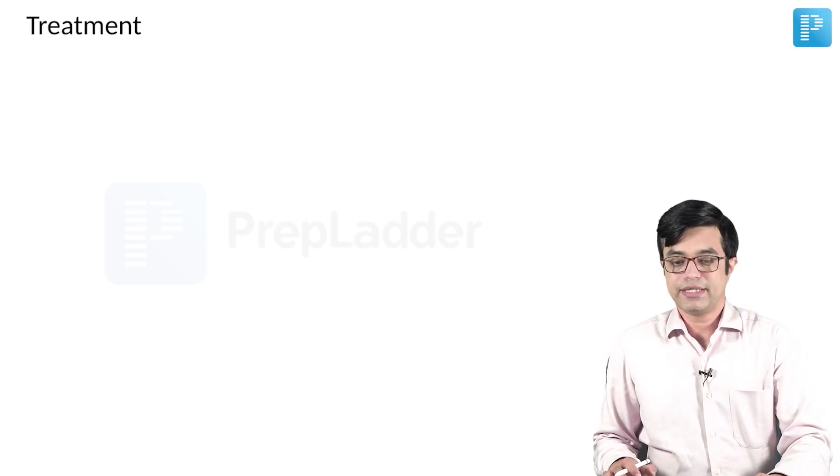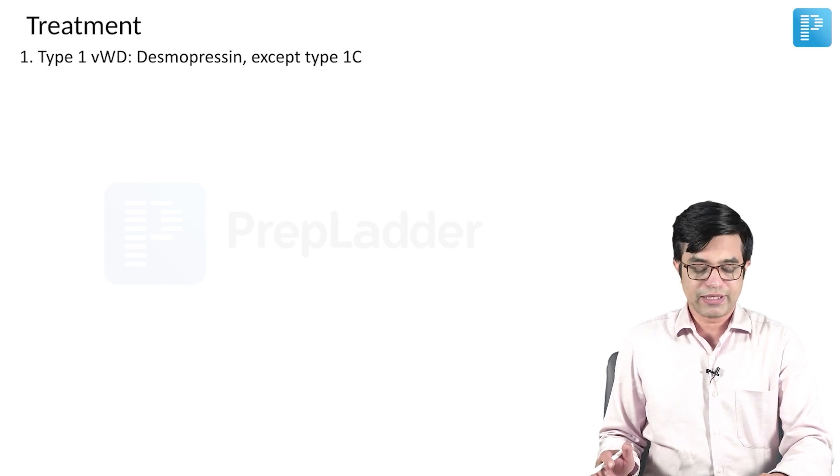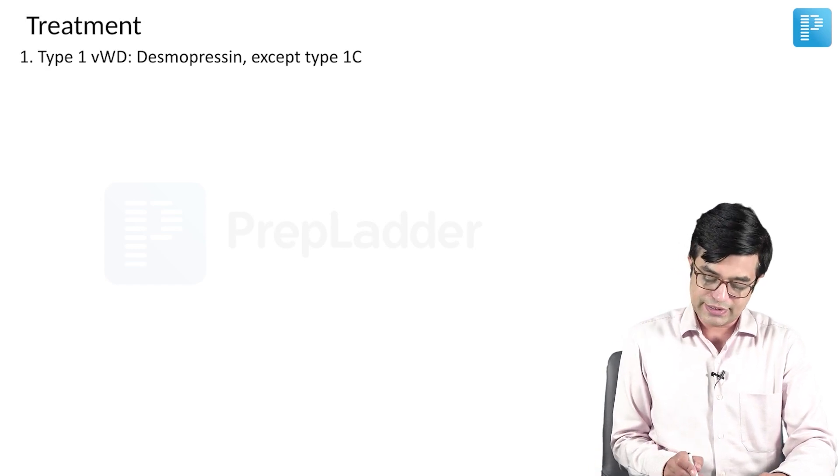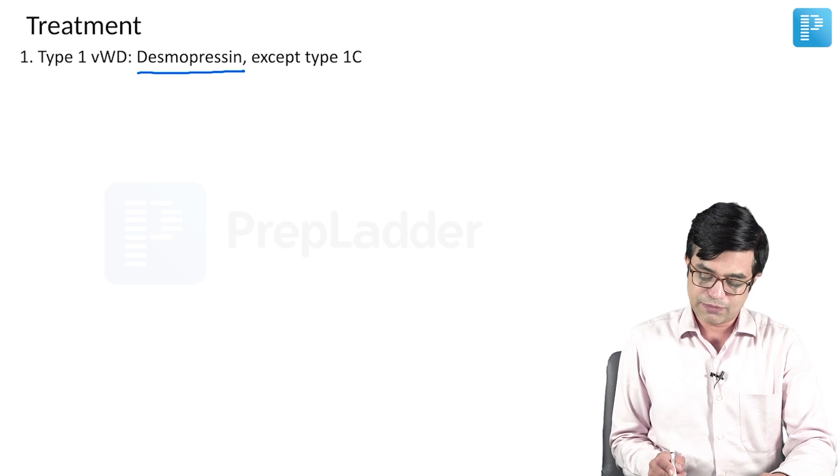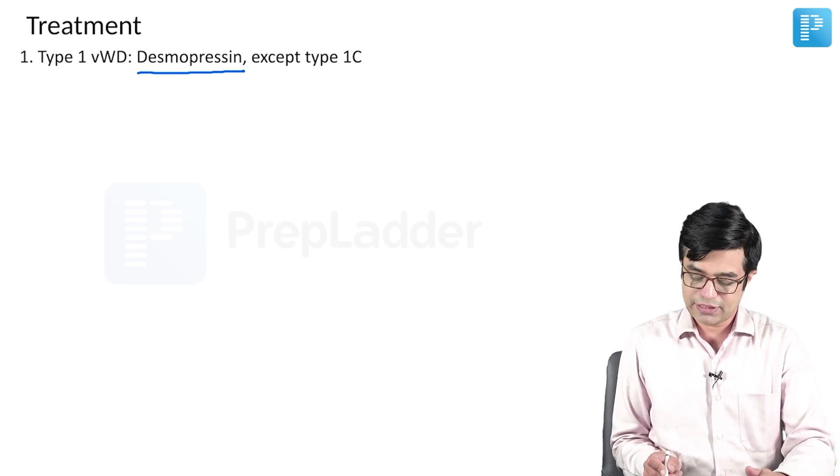What is the treatment for von Willebrand disease? In type 1 von Willebrand disease, the drug of choice is desmopressin. Desmopressin is given in all forms except type 1c.